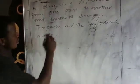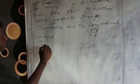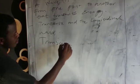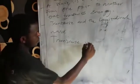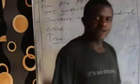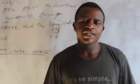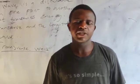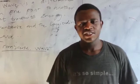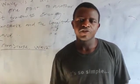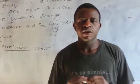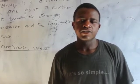So we start by talking about the transverse wave. A transverse wave is defined as a type of wave where the vibration of the particles are at right angle to the direction of the travel of the wave.